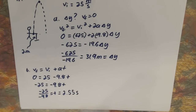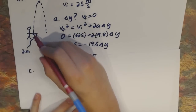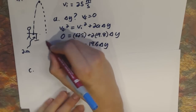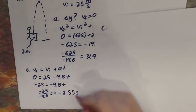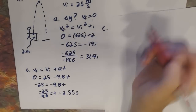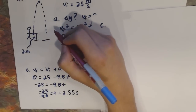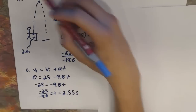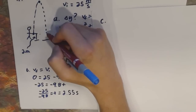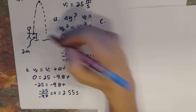Part C asks: how long does the ball take to hit the ground after it reaches its highest point? This is tricky because the ball initially started 2 meters off the ground, and it wants to know how long it takes to hit the ground, which is 2 meters below its starting point. You'd be inclined to think the time down equals the time up, but since there's an extra 2 meters, the time is going to be a little different and we have to solve for it.